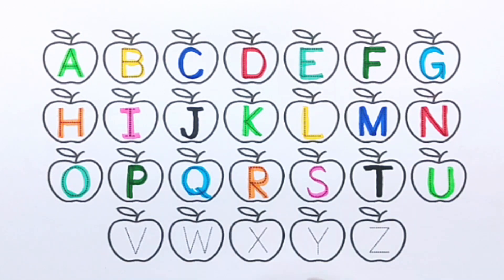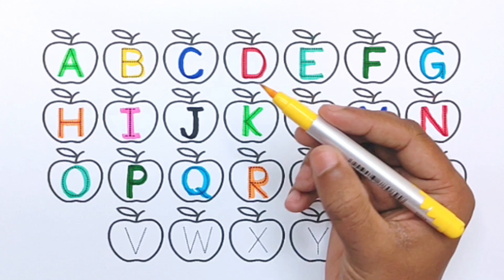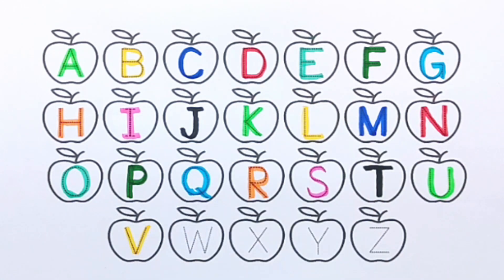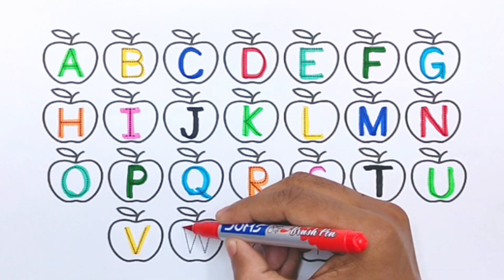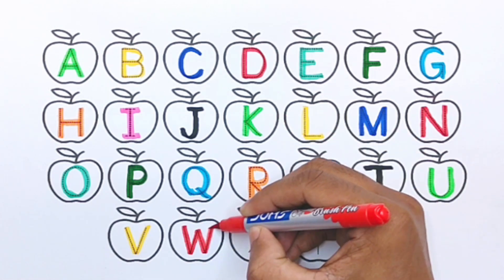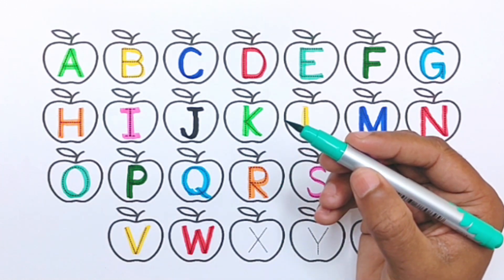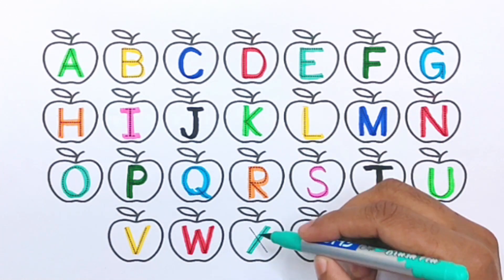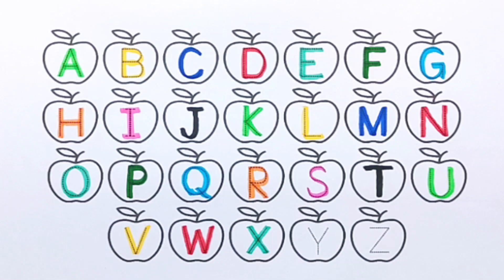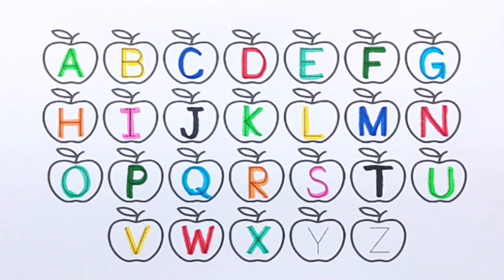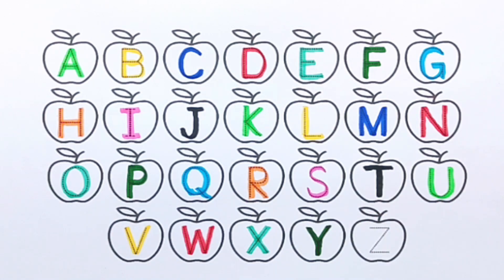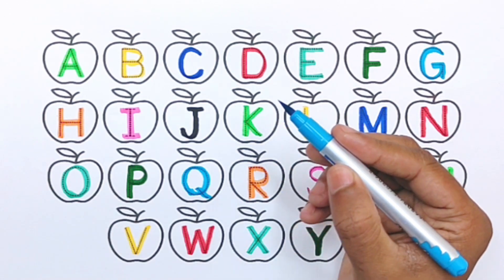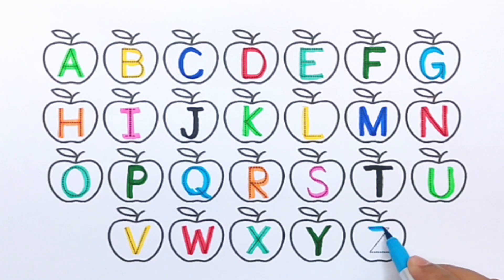Light green color. U, U for umbrella. Yellow color. V, V for vest. Red color. W, W for watermelon. Sea green color. X, X for xylophone. Green color. Y, Y for yo-yo. Sky blue color. Z, Z for zebra.